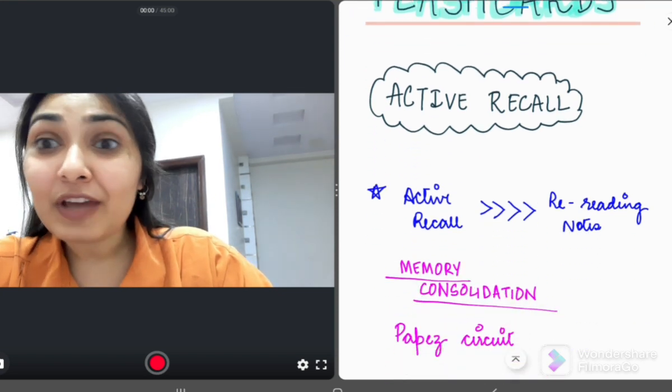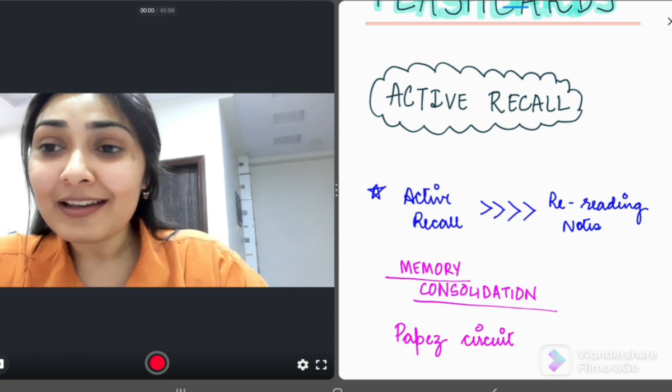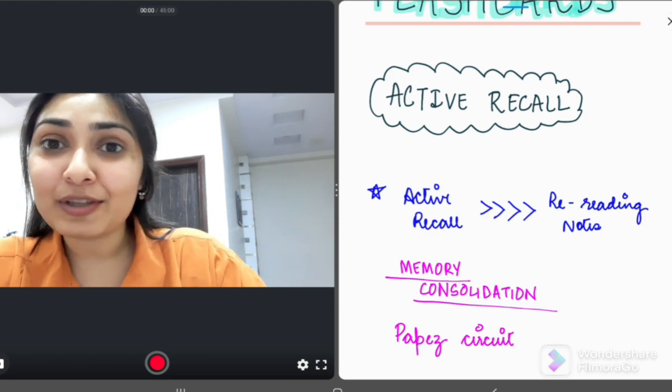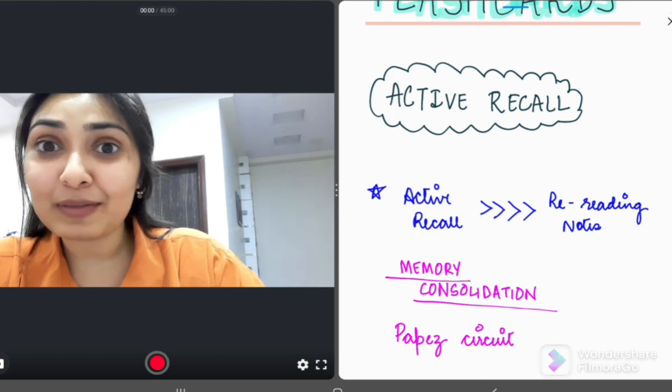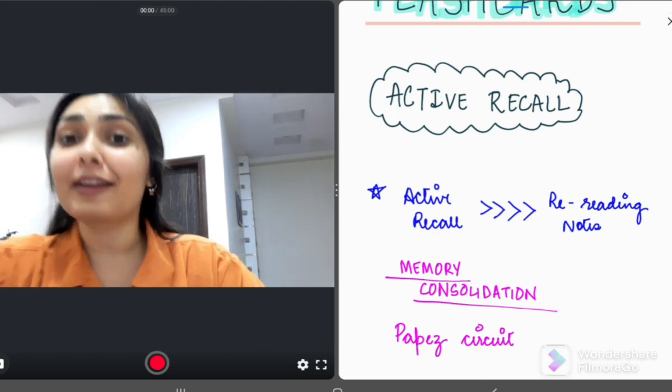We know that we have an amazing memory consolidation process happening in our brain, the Papez circuit, including the anterior nucleus of the hypothalamus, caudate nucleus, hippocampus, and mammillary bodies. They form the Papez circuit and by repeating and doing the task again and again, we consolidate that memory and it becomes a habit.